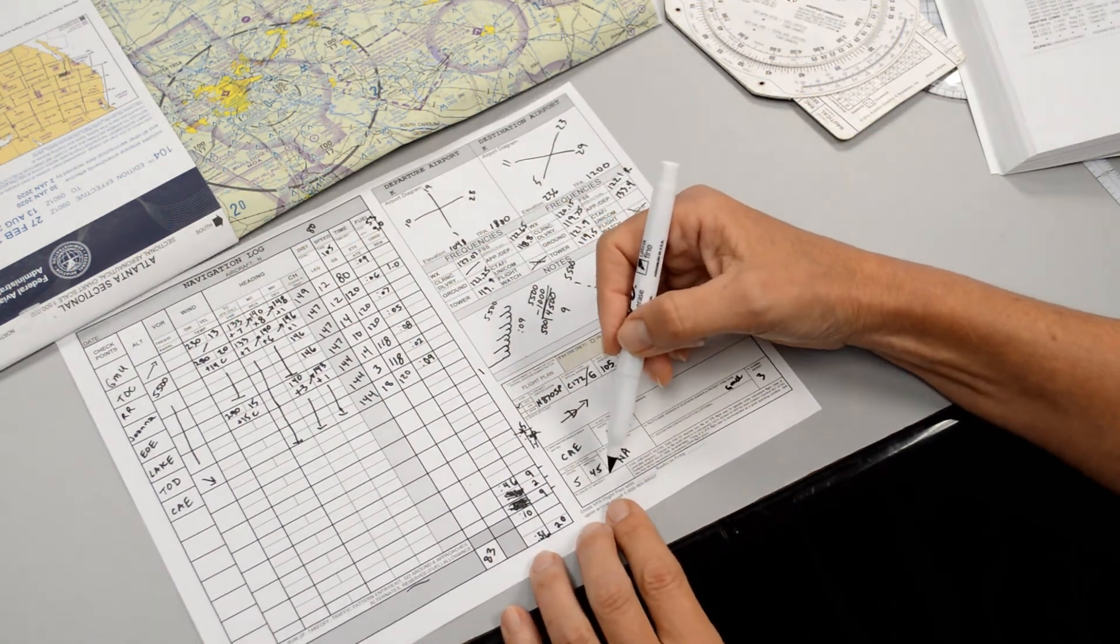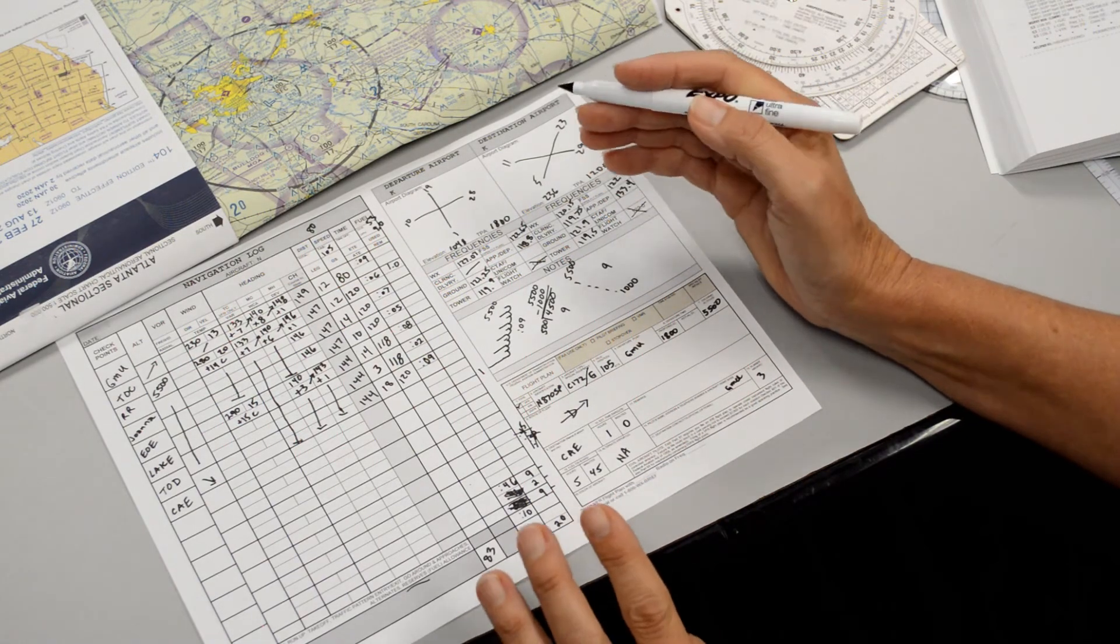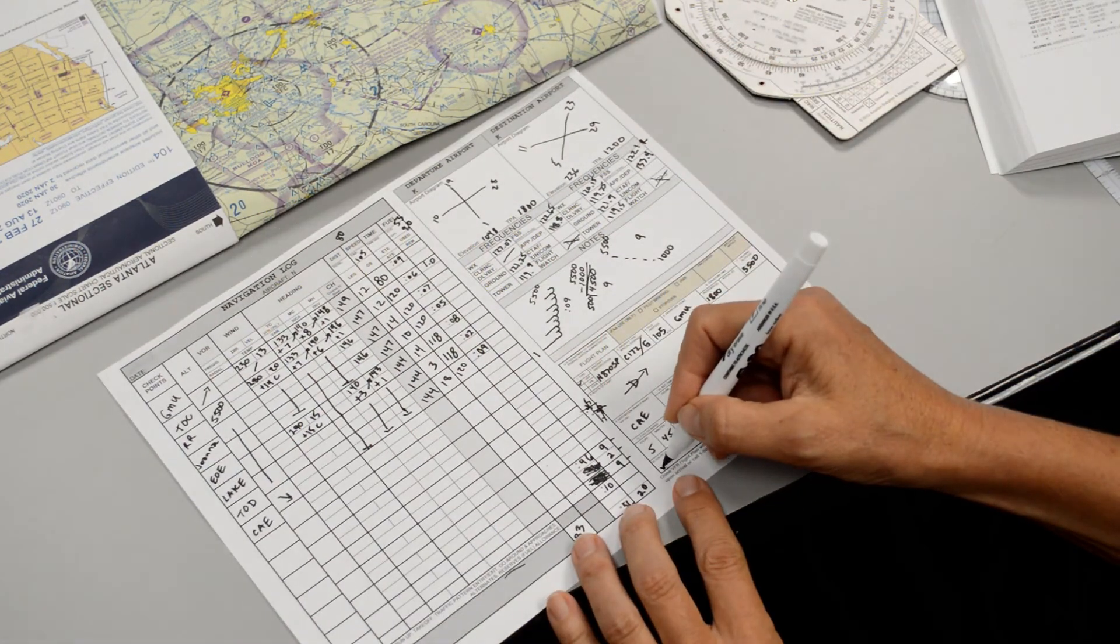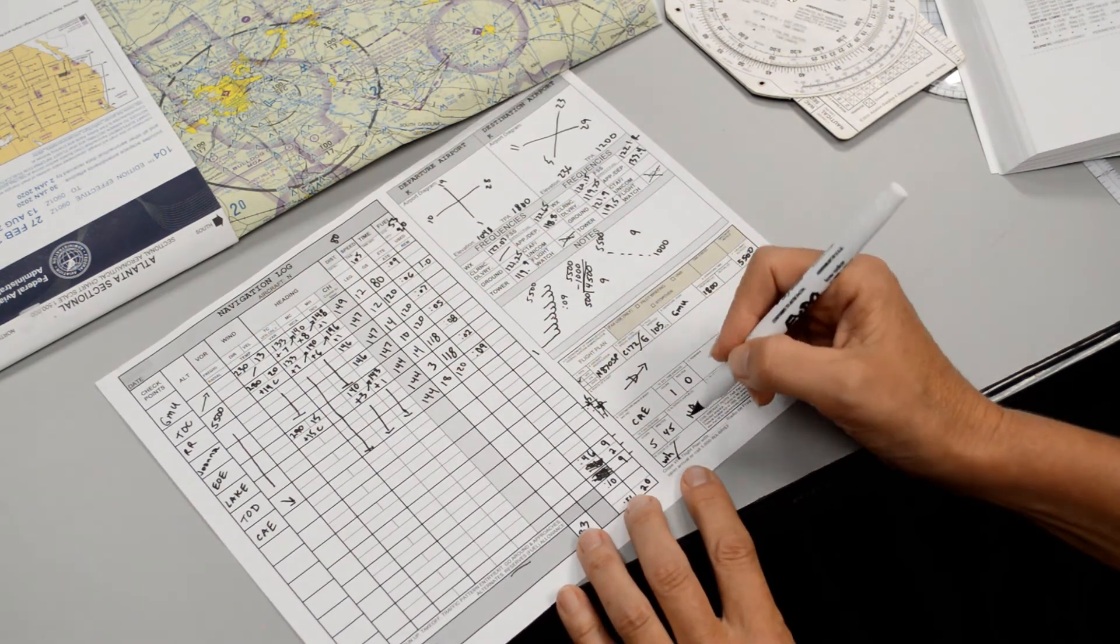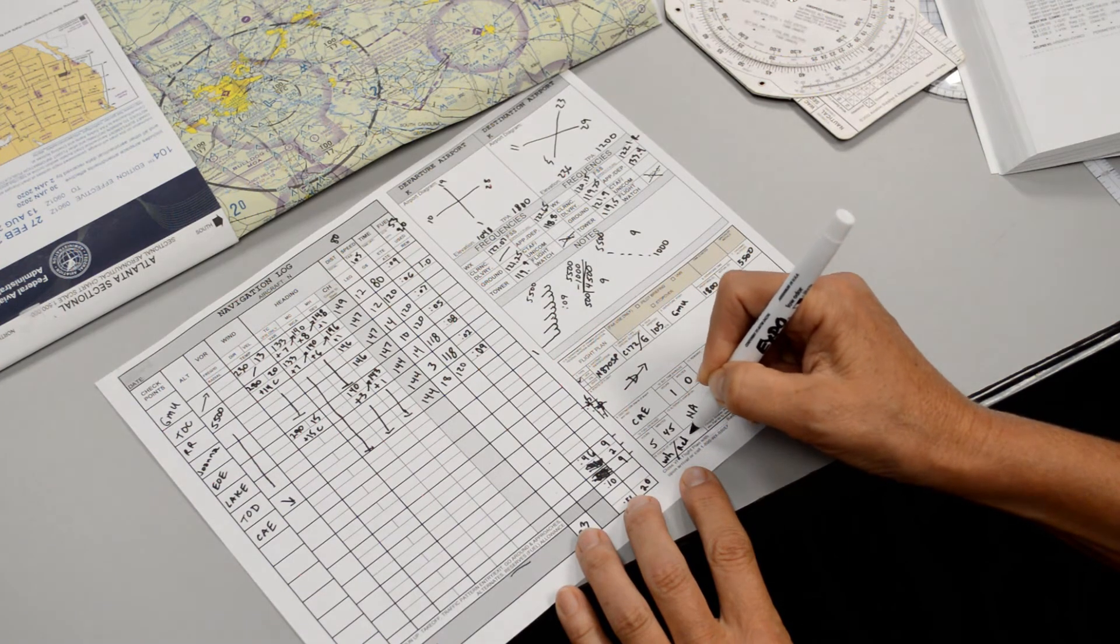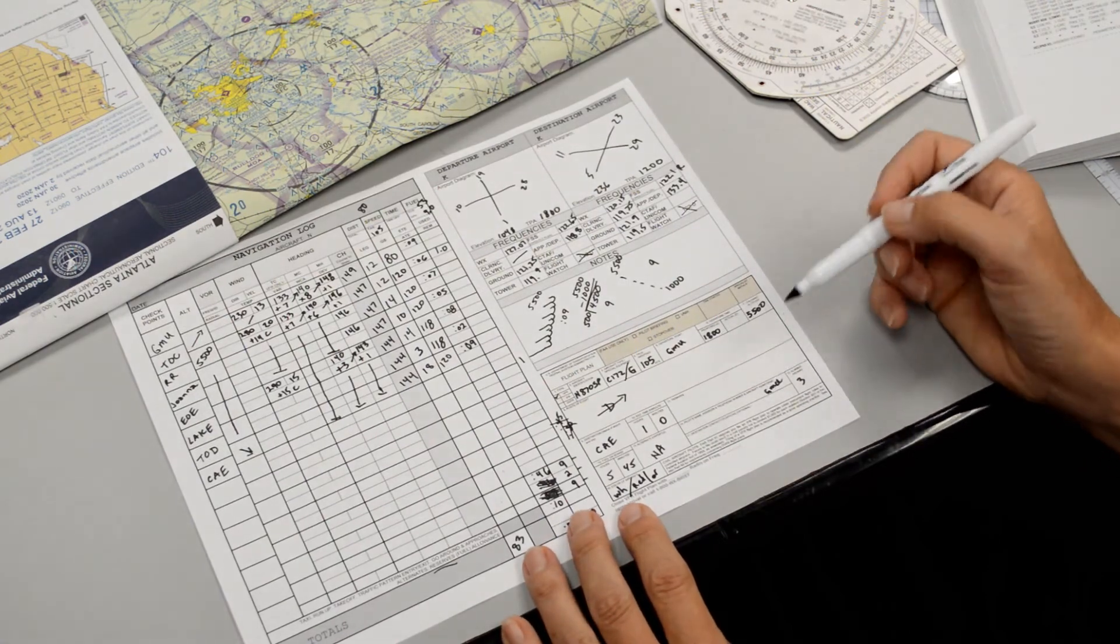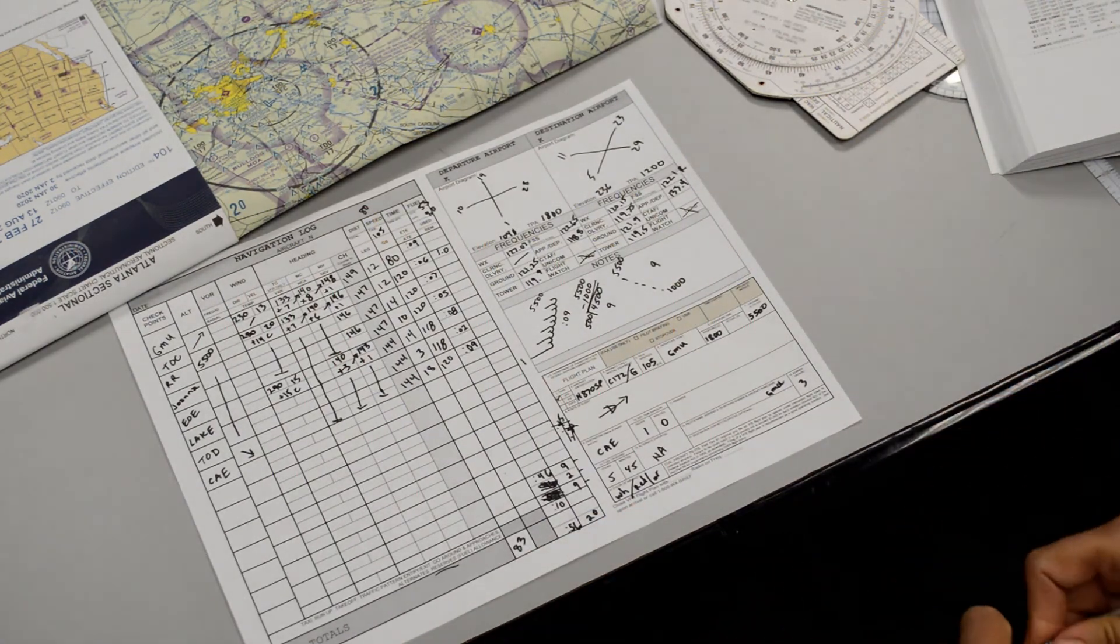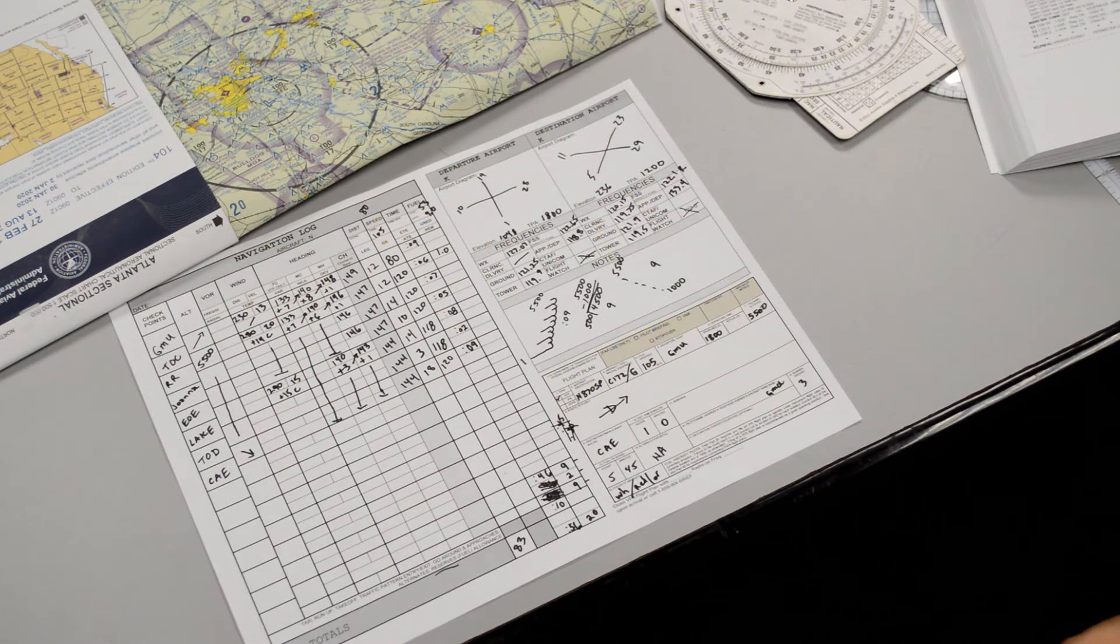And then down here, it says color of aircraft. So the color of the aircraft is the dominant color first, which is white. And then any stripes or markings or anything on the airplane you list. So it has a red and orange. All right. Now we have this filled out. We're ready to call the flight service station. So we'll dial them up, 1-800-WX-BRIEF.